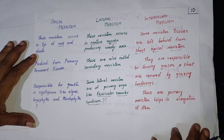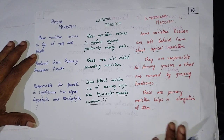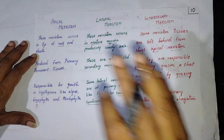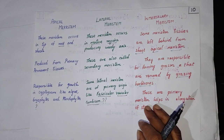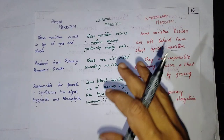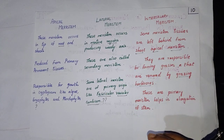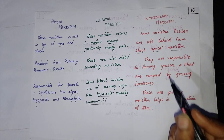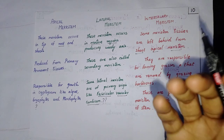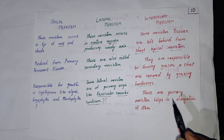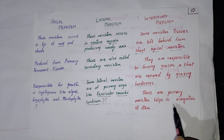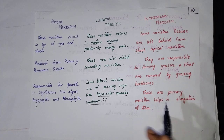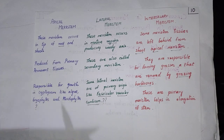Herbivorous animals have a tendency to graze on the top layers of the grass. They don't graze out the entire plant — they just graze at the top and then leave it. The grass then grows back due to the presence of the intercalary meristems. They are primary meristems involved in the elongation of the stem.